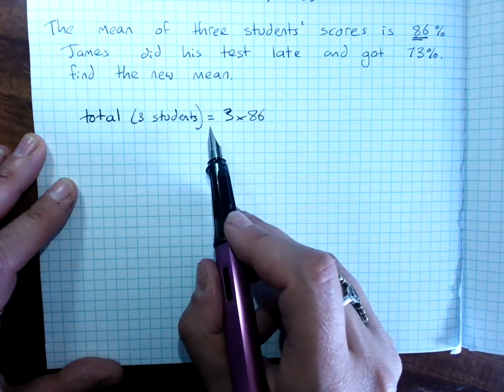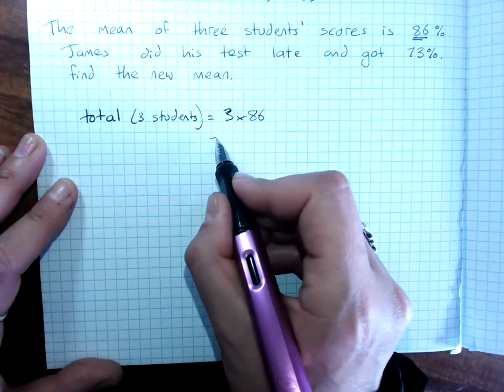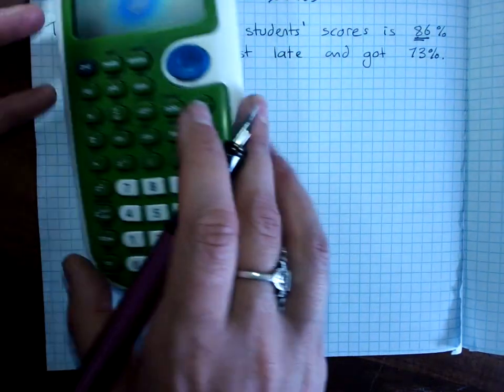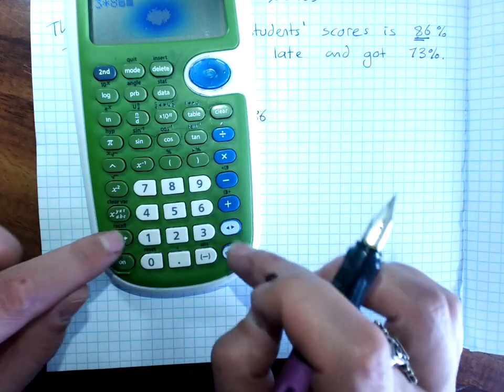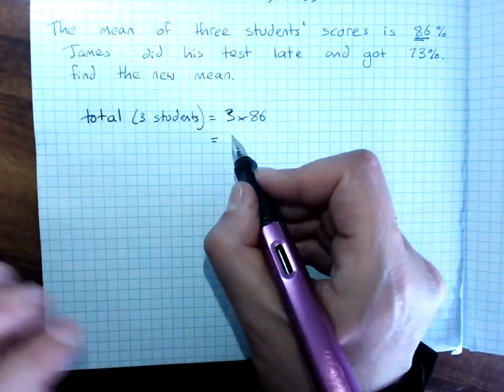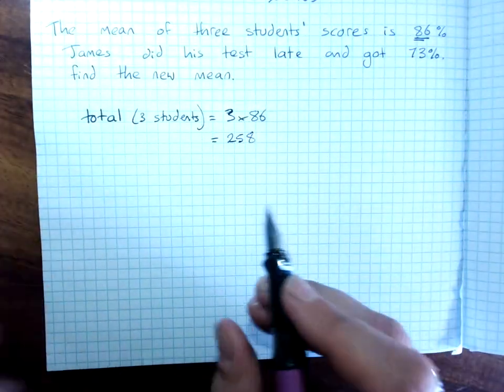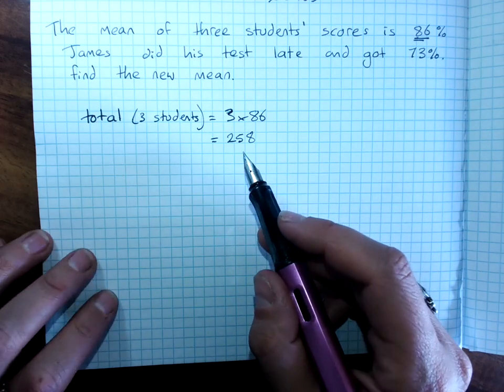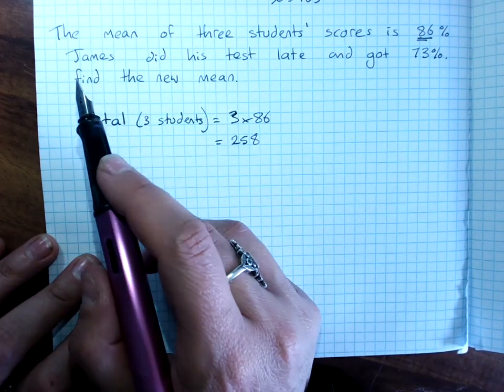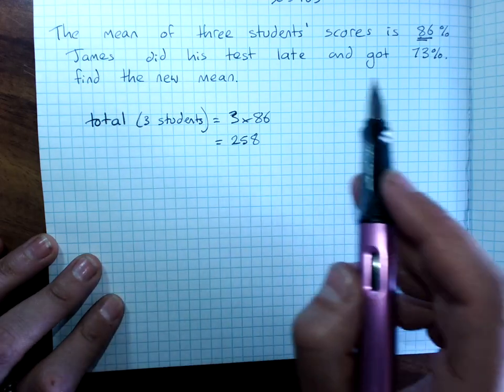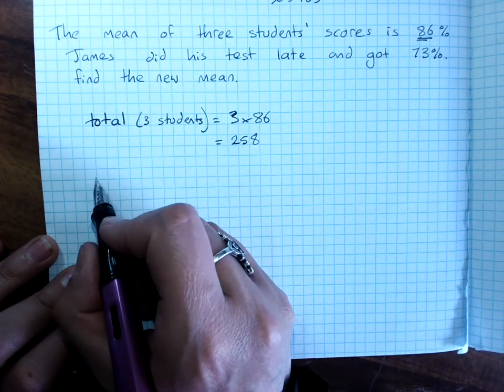I don't know what their individual scores were, but I know that on average it's 86. So, I can get the total by doing 3 times 86, 258. So, that was what the first three students got altogether.